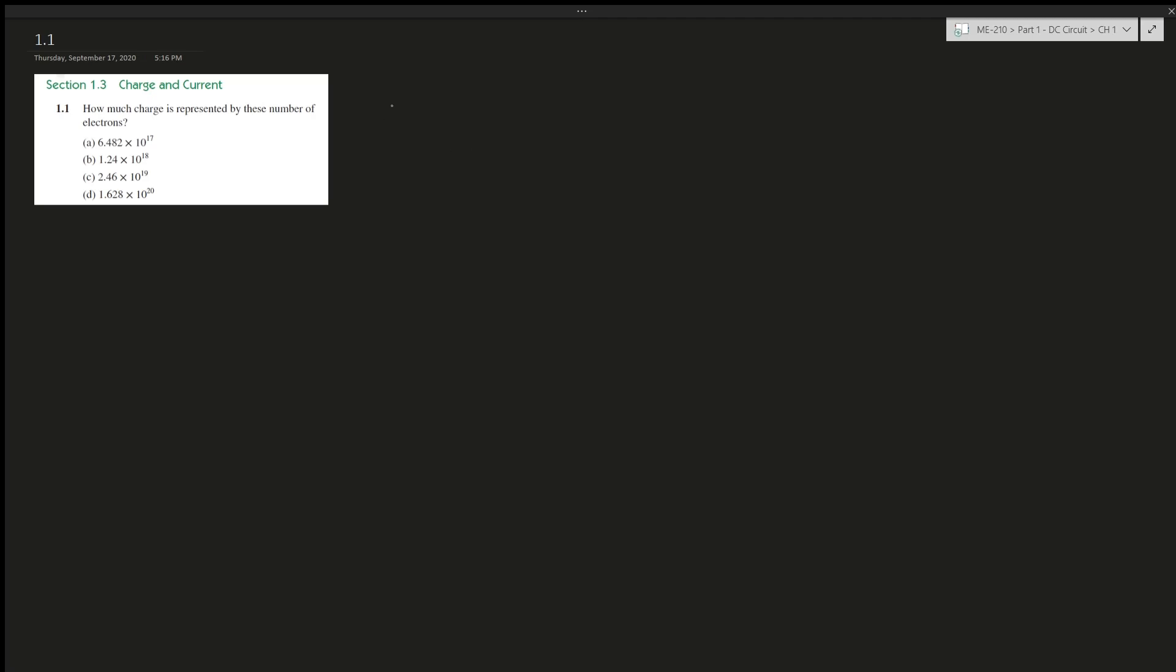So we all know that one charge has 6.242 times 10 to the power of 18 electrons, right? And we can just use this number and divide it by this many electrons to give us charges.